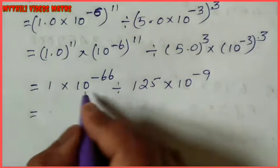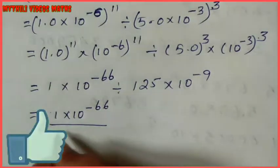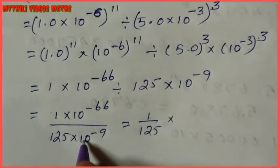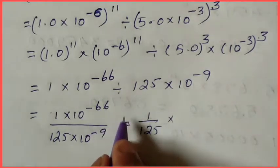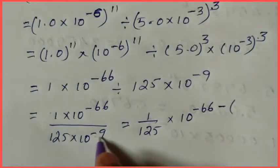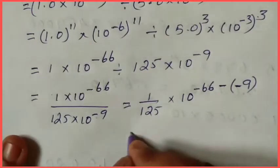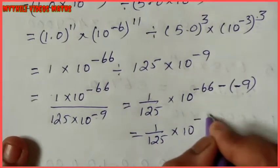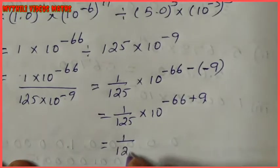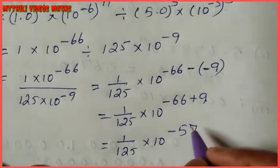So we have 1 into 10 power minus 66, divided by 125 into 10 power minus 9. Subtracting in the denominator: minus of minus 9 becomes plus 9. So this is equal to 1 divided by 125 into 10 power: minus 66 minus (minus 9) equals minus 66 plus 9, which is minus 57. The answer so far is 1/125 into 10 power minus 57.